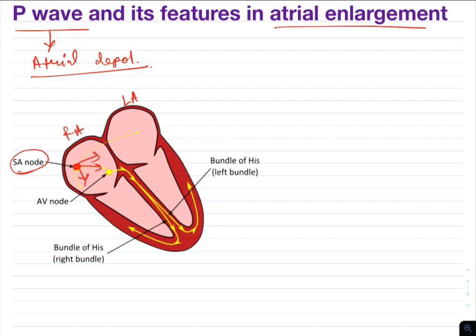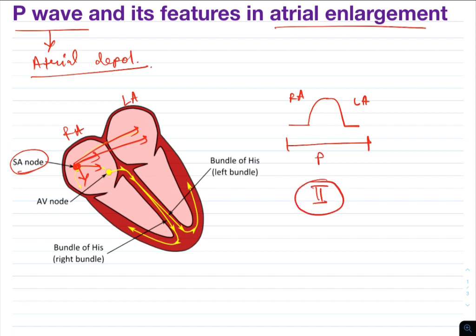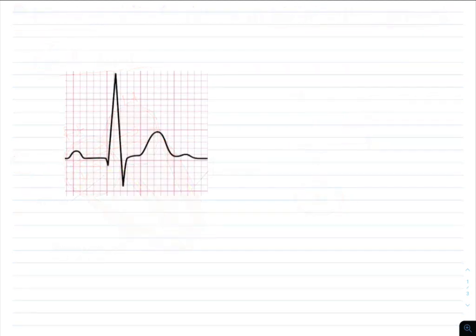The right atrium is depolarized first, followed by depolarization of the left atrium. So the initial half of the P wave is due to the right atrium, and the later half is due to the left atrium. This pyramidal-shaped P wave is usually studied in frontal plane leads and is most commonly examined in lead 2.